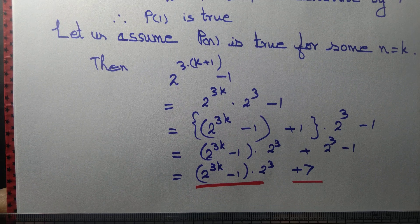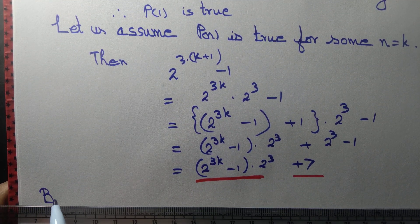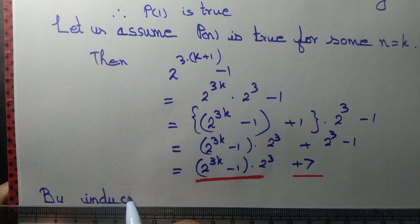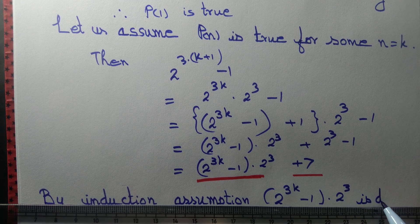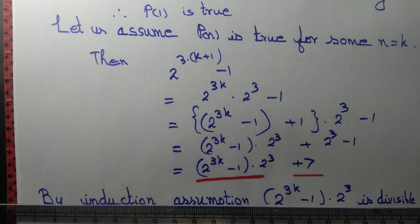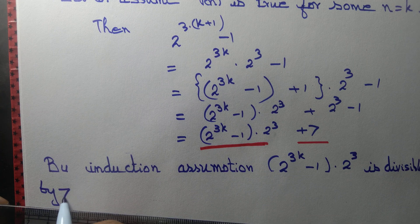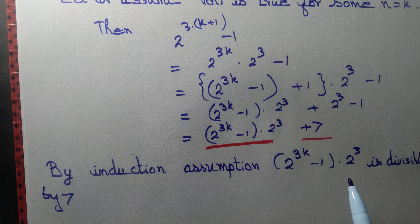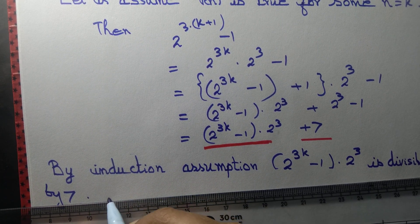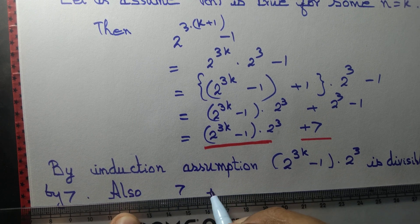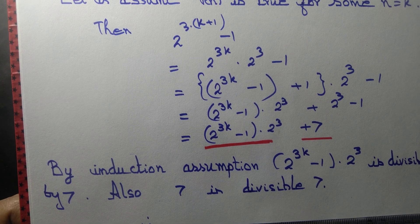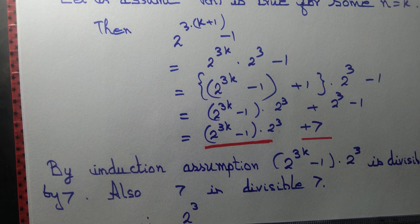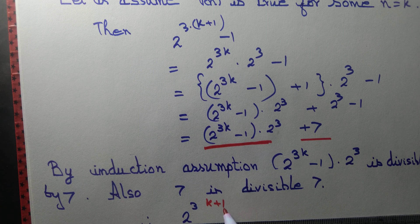So let us write it. By the induction assumption, 2 to the power 3k minus 1 into 2 cubed is divisible by 7. Also, 7 is divisible by 7. Therefore, 2 to the power 3 into (k+1) minus 1 is divisible by 7.